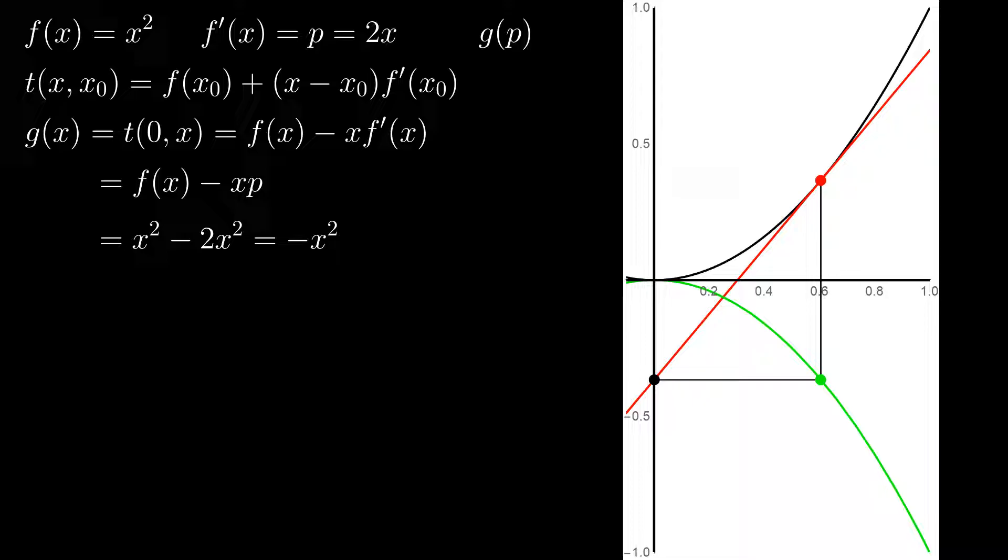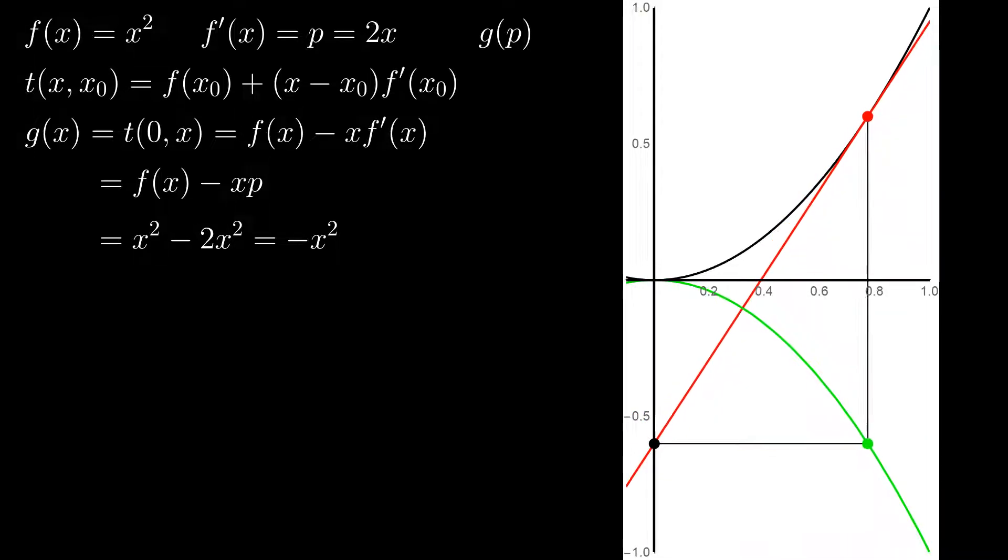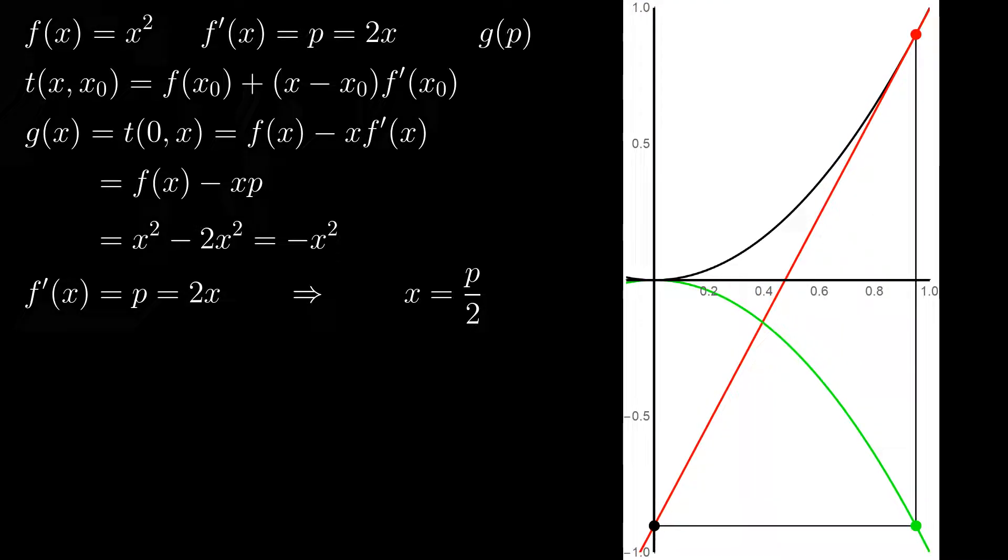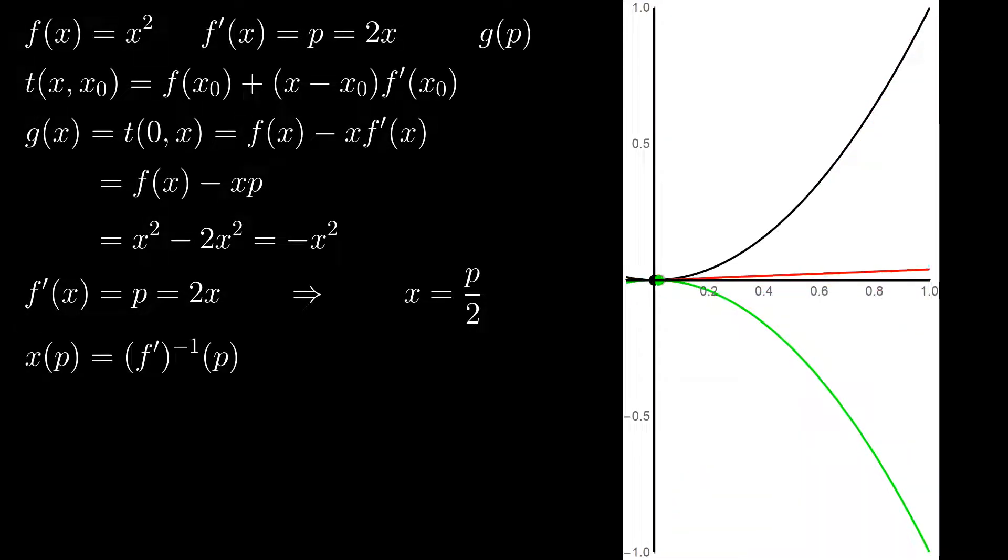In our example, this gives minus x squared. We're not completely there yet, because the Legendre transform is always a function of a different variable than the original function, and it is in fact a function of the derivative of the original function, which we called p. So, we have to express x as a function of p and put that into our expression for g,